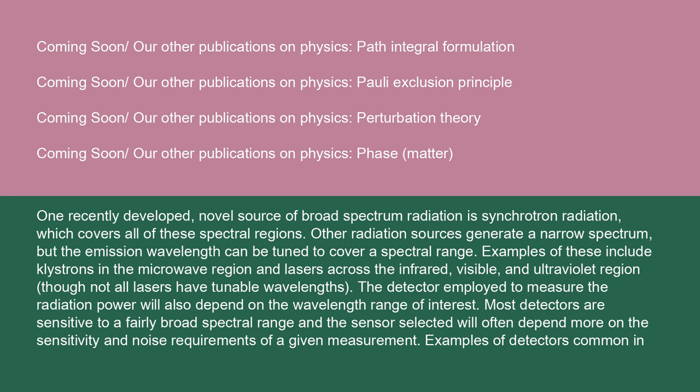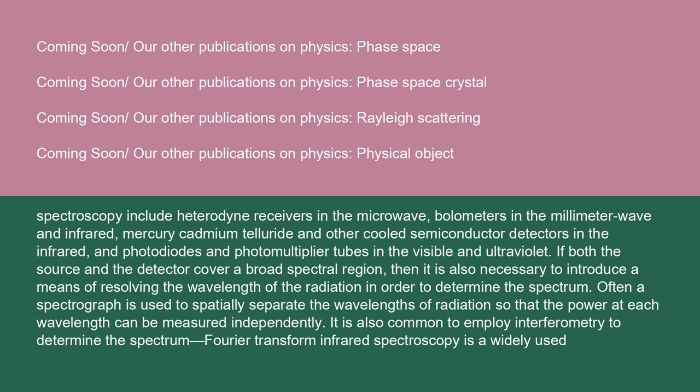The detector employed to measure the radiation power will also depend on the wavelength range of interest. Most detectors are sensitive to a fairly broad spectral range, and the sensor selected will often depend more on the sensitivity and noise requirements of a given measurement. Examples of detectors common in spectroscopy include heterodyne receivers in the microwave, bolometers in the millimeter wave and infrared, mercury cadmium telluride and other cooled semiconductor detectors in the infrared, and photodiodes and photomultiplier tubes in the visible and ultraviolet. If both the source and the detector cover a broad spectral region, then it is also necessary to introduce a means of resolving the wavelength of the radiation. Often a spectrograph is used to spatially separate the wavelengths so that the power at each wavelength can be measured independently. It is also common to employ interferometry to determine the spectrum.